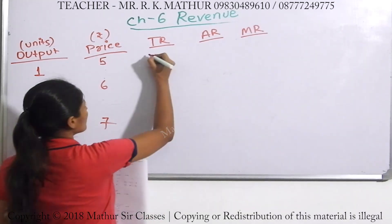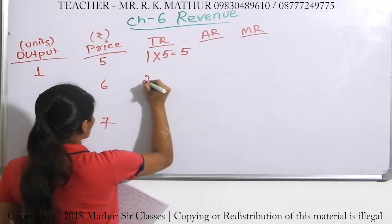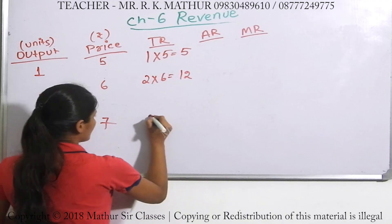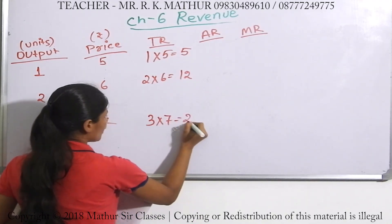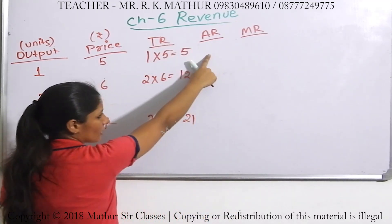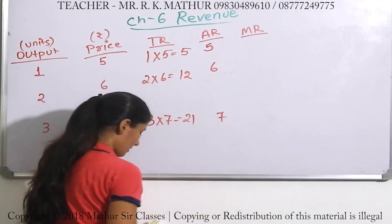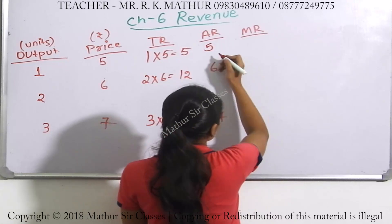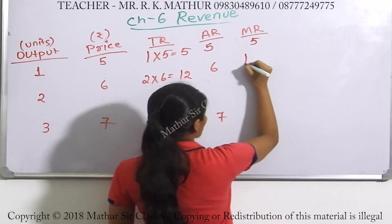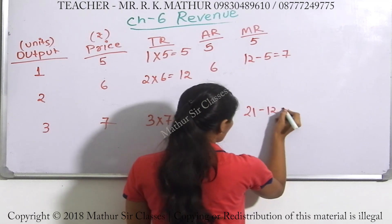Total revenue: 1 into 5 is 5, 2 into 6 is 12, and 3 into 7 is 21. Average revenue is just the price: 5, 6, and 7. Then marginal revenue: 12 minus 5 is 7, and 21 minus 12 is 9.